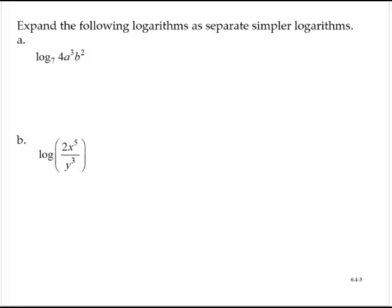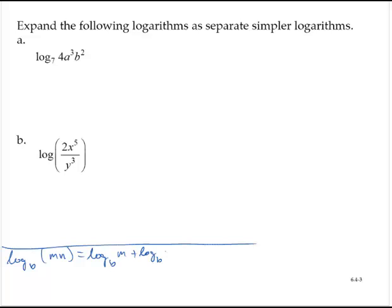Expand the following logarithms as separate simpler logarithms. We have several rules at our disposal. We know that the log base b of m times n is equal to the log base b of m plus the log base b of n, and we know that the log base b of m over n is the log base b of m minus the log base b of n.